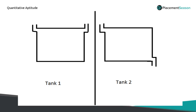Consider two tanks: Tank 1 and Tank 2. In Tank 1, we have pipe A and pipe B, and both are inlet pipes. Pipe A fills the tank and pipe B also fills the tank. If both pipes are open, the tank will be filled quickly. This is similar to the concept of Time and Work — both A and B are adding work to complete the task.